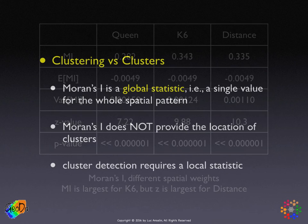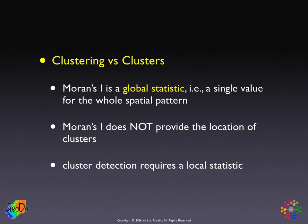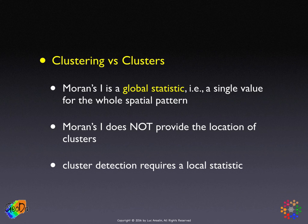Two more important concepts to keep in mind when interpreting Moran's I results. First is the difference between clustering and clusters. Clustering is a global property — Moran's I is a single number for the complete spatial pattern. It does not tell you anything about where the clusters might be. It simply says that the pattern as such is more clustered than it would be under spatial randomness. To get the location of the actual clusters, one needs a local statistic.